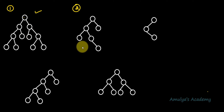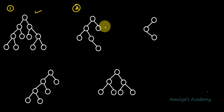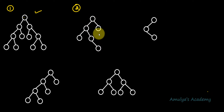For the second example, the root contains 2 children, one of its child nodes also has 2 children, but another node contains only 1 child node. So this is a binary tree but it is not a full binary tree.